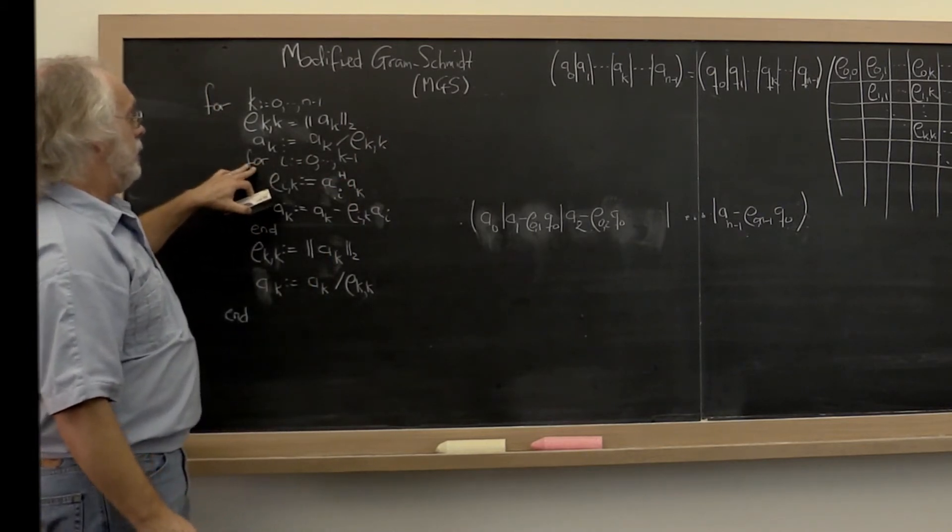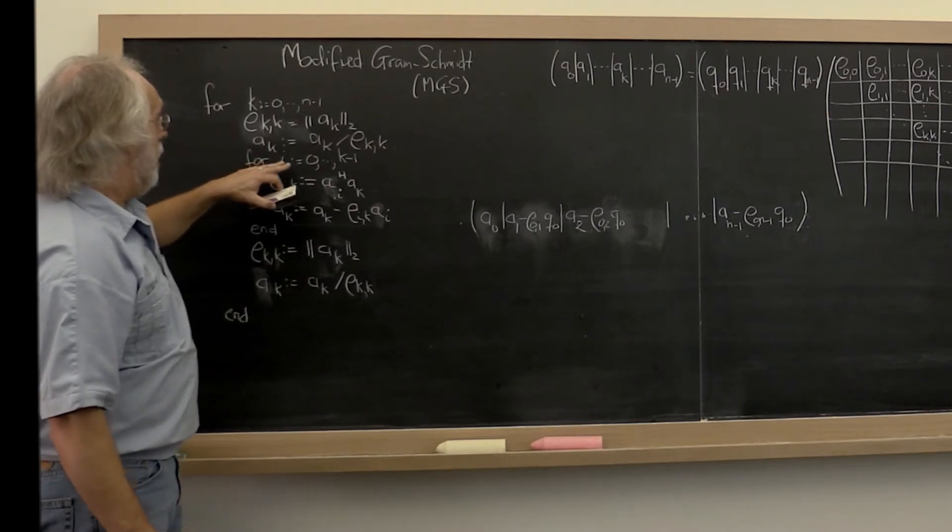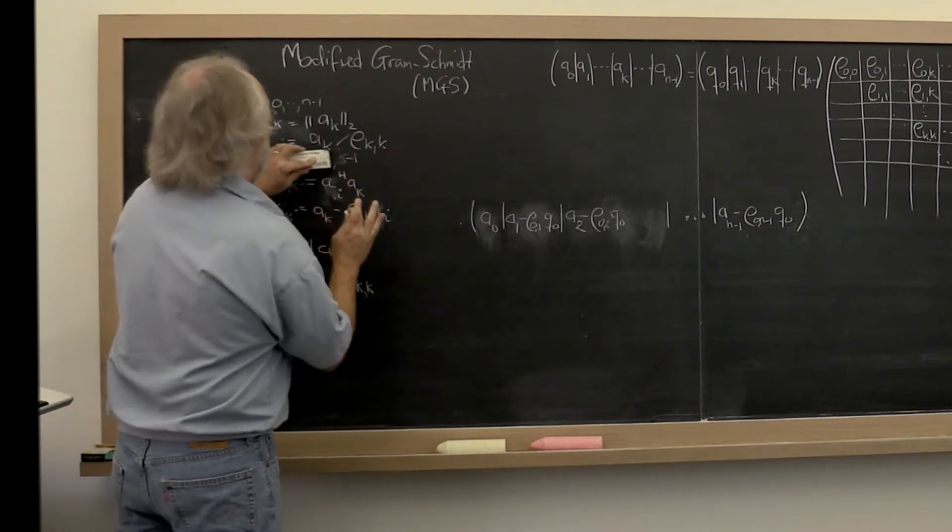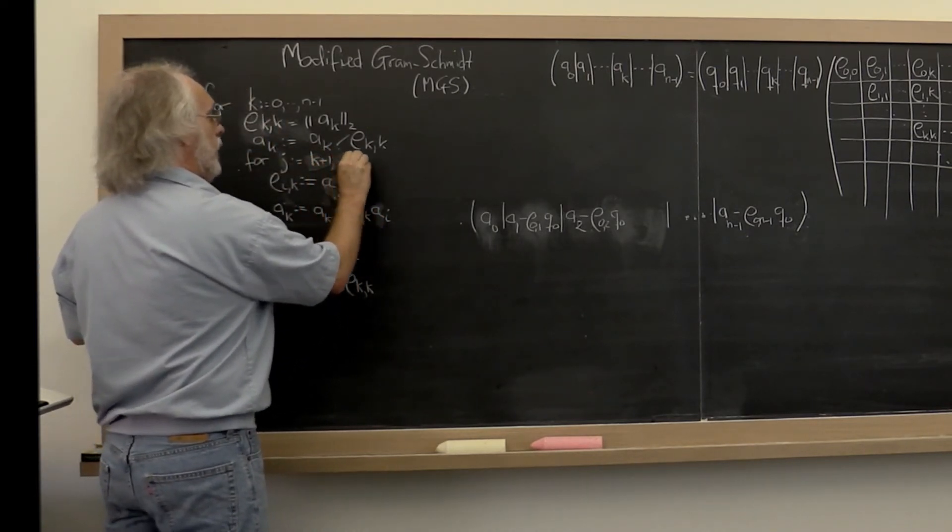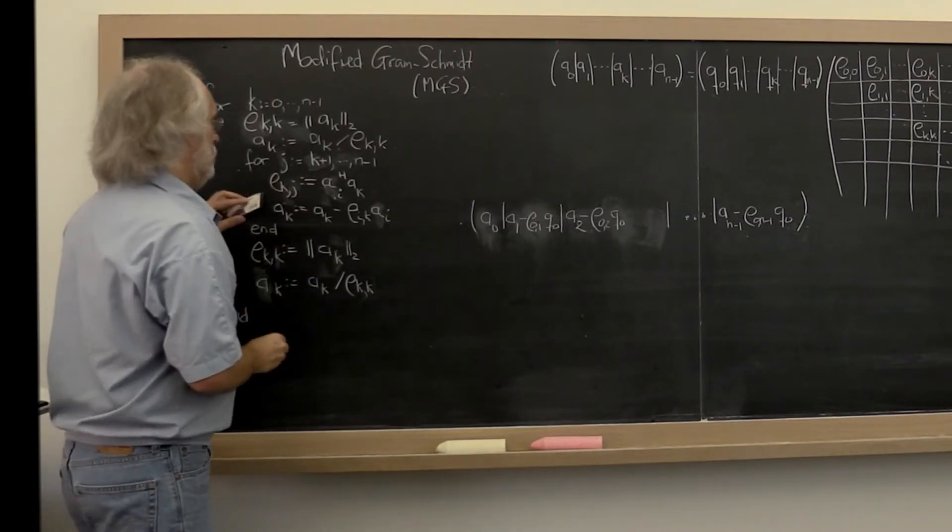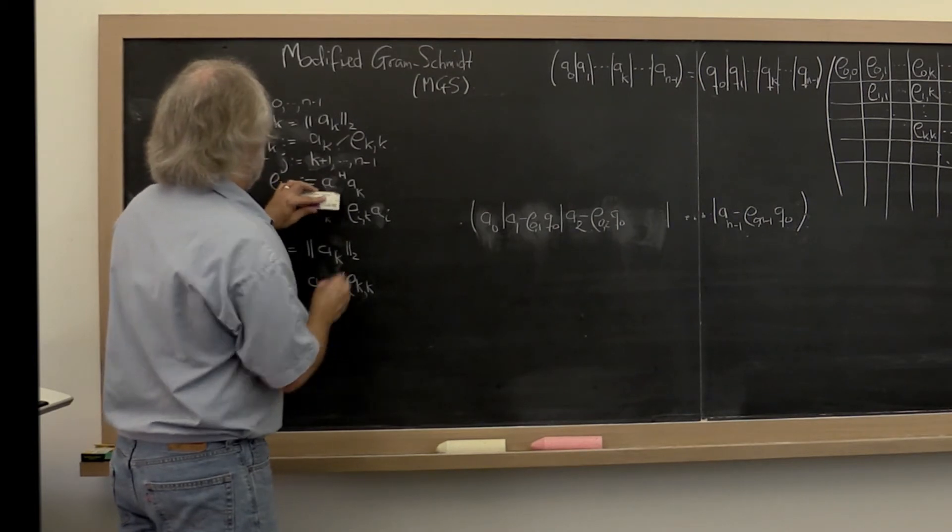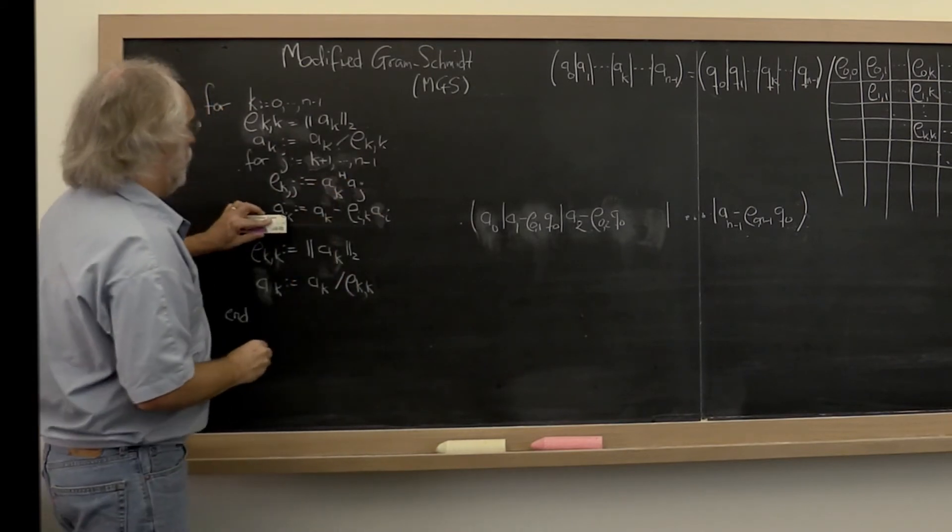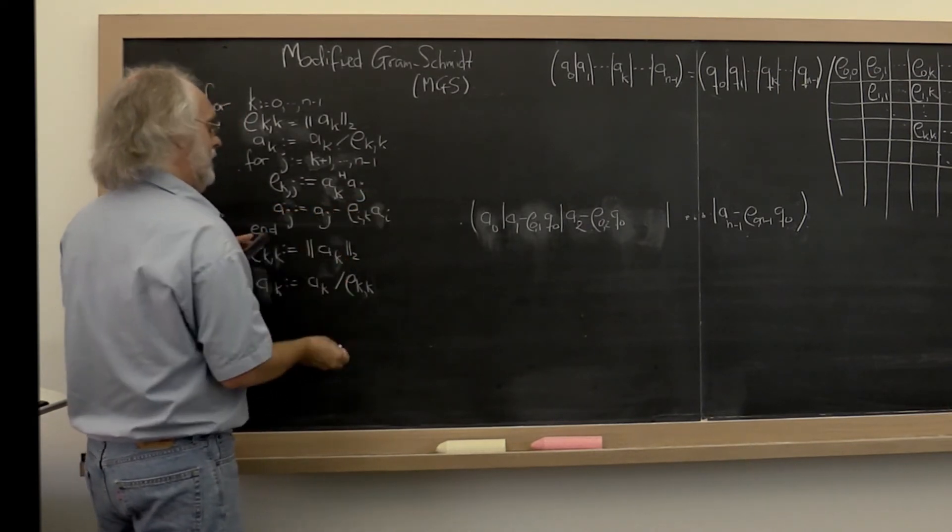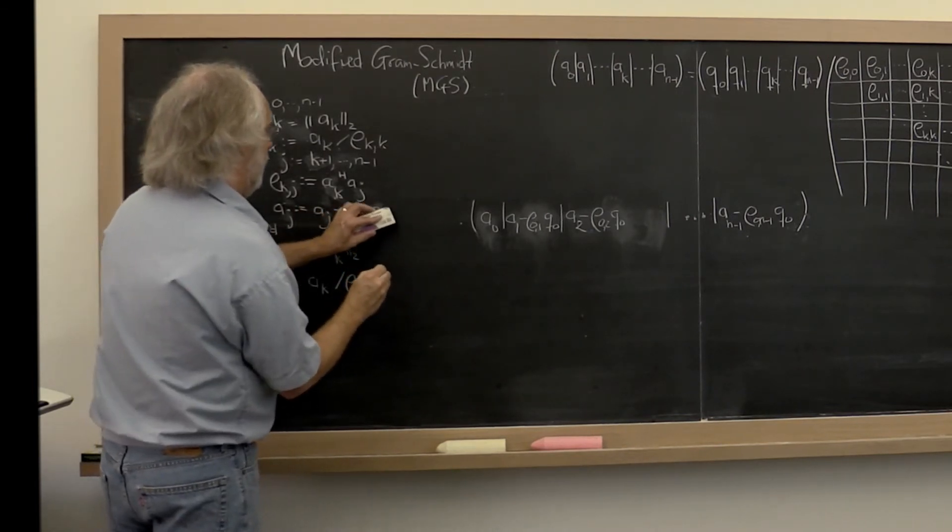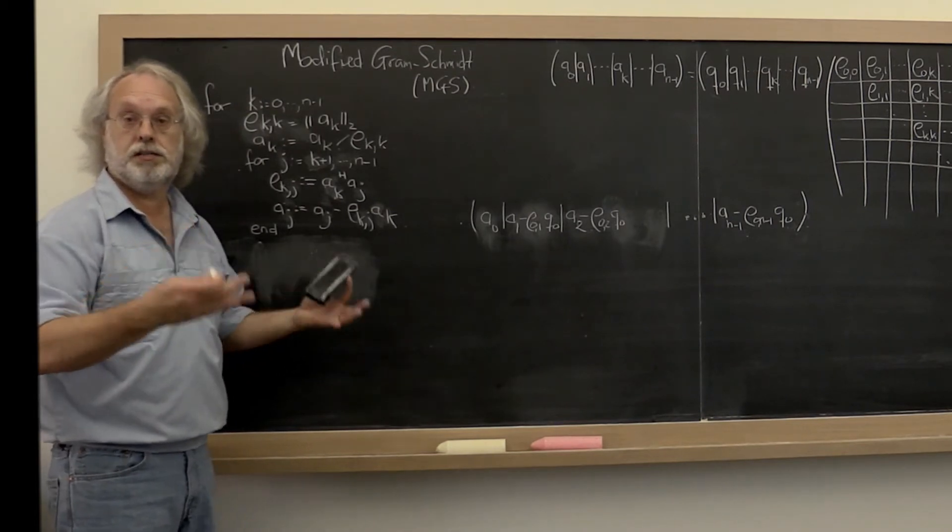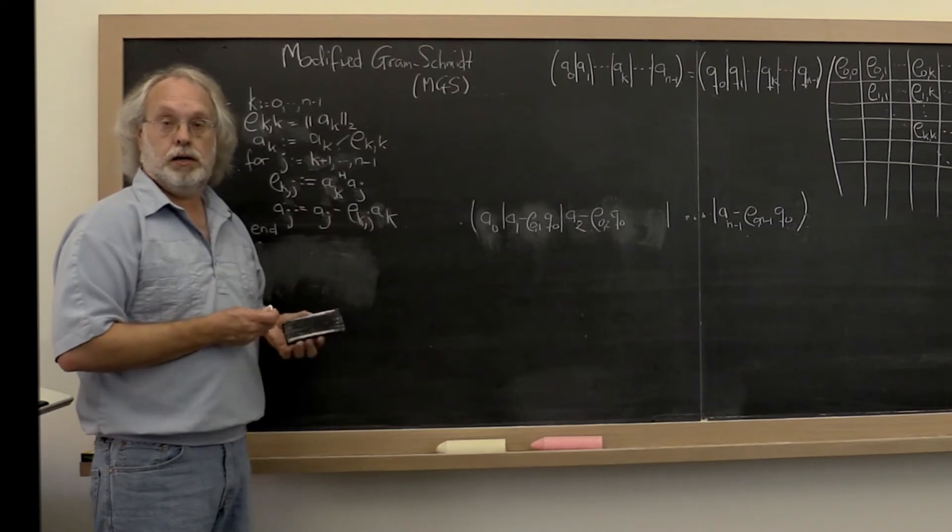And then we can say for J from K plus one through N minus one, we want to compute the rest of the coefficients in this row. And then we want to subtract that off of the rest of the columns. And then we don't need to do this at the bottom of the loop. And you can see how this particular algorithm is actually equivalent to what we had before.